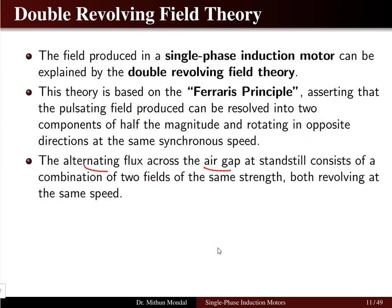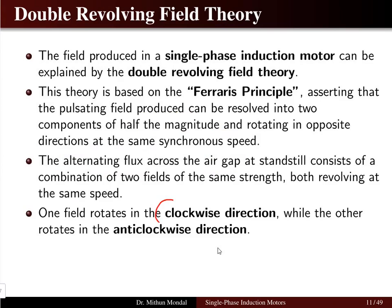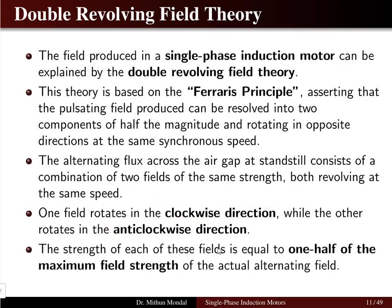The alternating flux across the air gap at standstill consists of a combination of two fields of the same strength but revolving at the same speed. This flux is produced in the air gap between the stator and the rotor, and these two fields are of the same strength. One will be rotating in the clockwise direction and the other in the anti-clockwise direction.